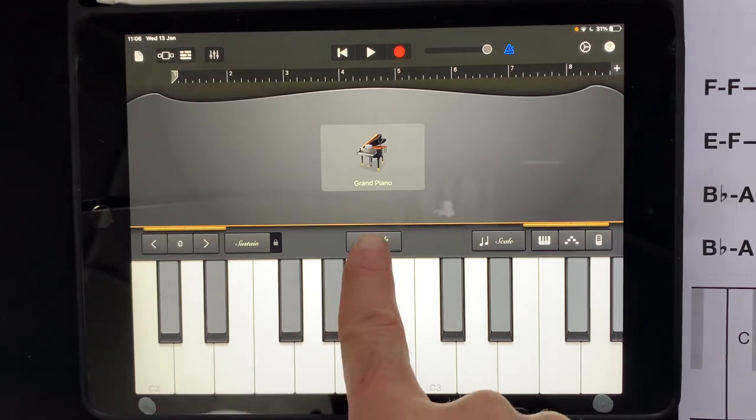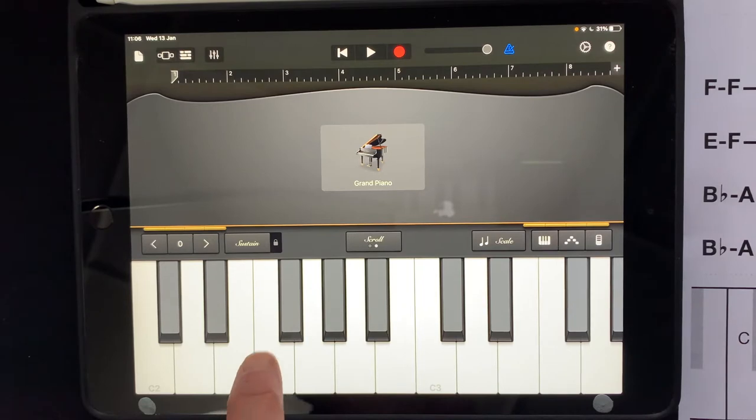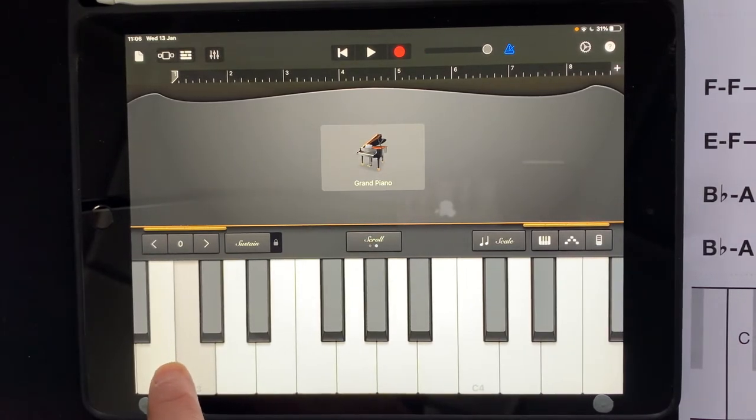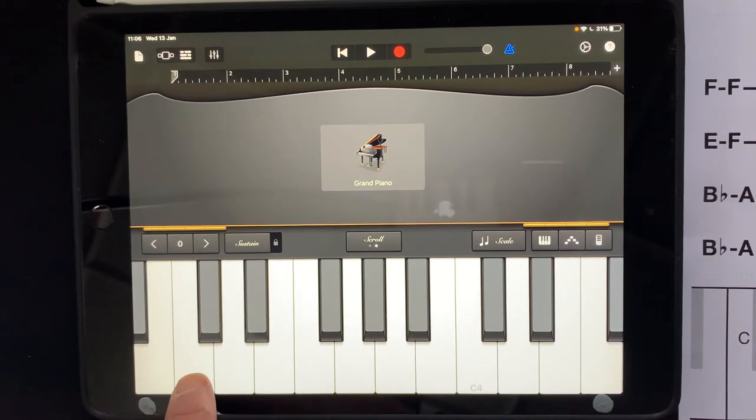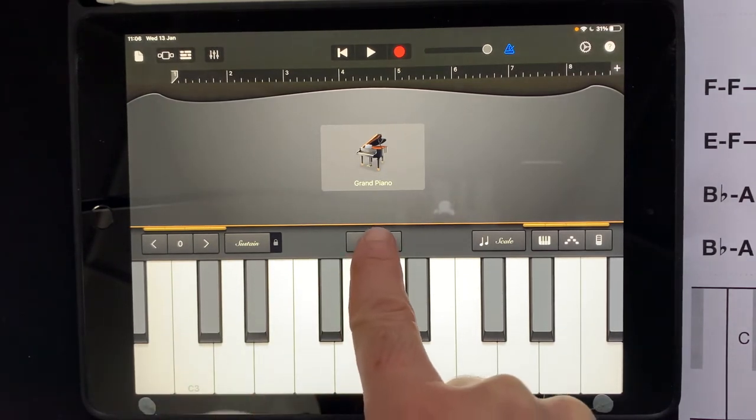So to do that we have to change from glissando to scroll here, and then we take hold of the C and pull it down so that becomes the second note on the keyboard. There we go. And then we hit this button again and that'll stop it from moving.